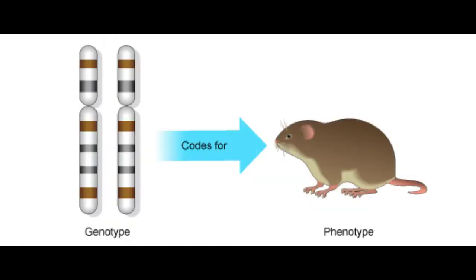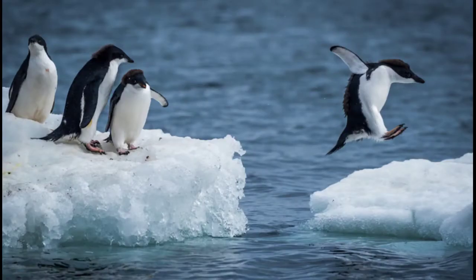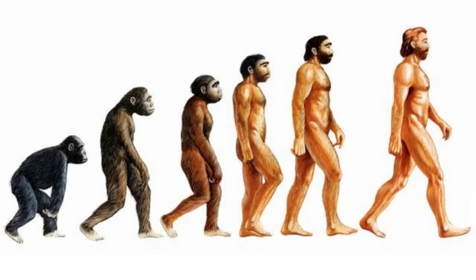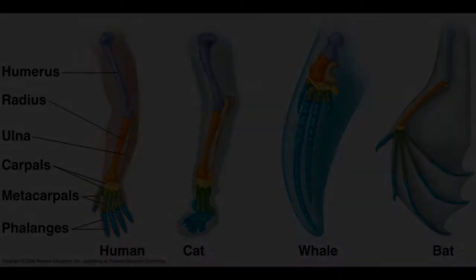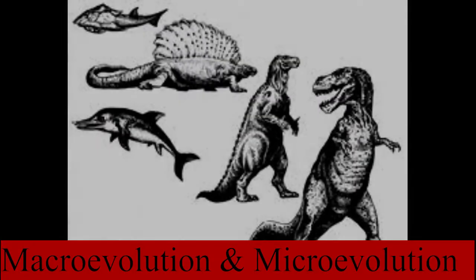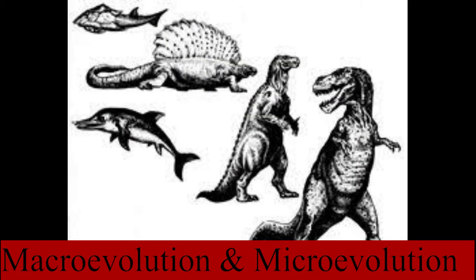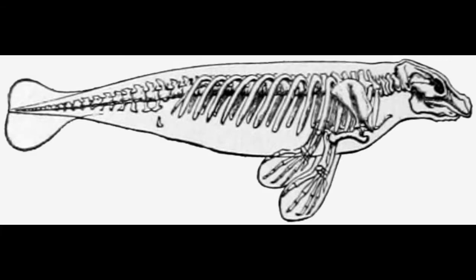Environmental pressures may push different organisms to create a better line of defense for themselves. This is the key mechanism of evolution — natural selection. Changes in the phenotype, or the physical and observable characteristics of an organism, may help it survive in harsh conditions better. The need to survive is what drives organisms to evolve better traits that may help them in the long run.